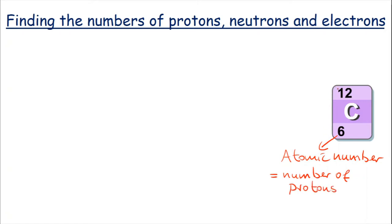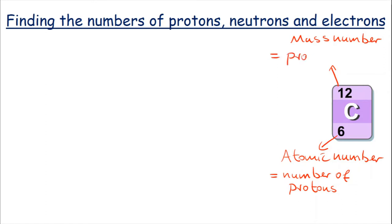The top number here is called the mass number, and the mass number tells us how many protons and neutrons there are together.